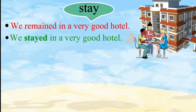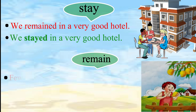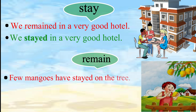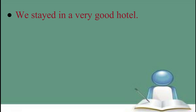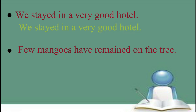Now let's see the usage of remain in a sentence. If we say 'Few mangoes have stayed on the tree,' it is wrong. The correct sentence is 'Few mangoes have remained on the tree.' Now repeat the correct sentences after me: 'We stayed in a very good hotel.' 'Few mangoes have remained on the tree.'